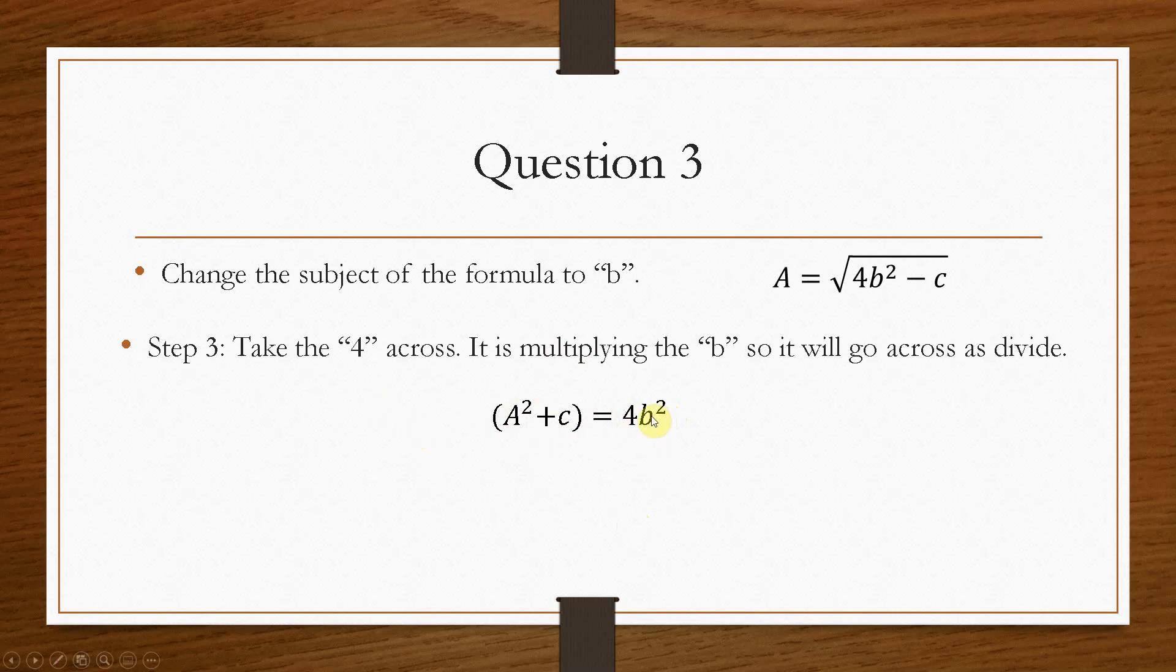Now the 4 is multiplying by the b squared. So it would have to go over as a divide. So that means we get a squared plus c, all over 4, and that equals b squared.